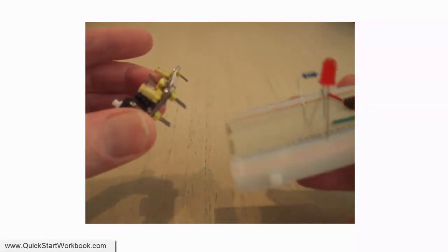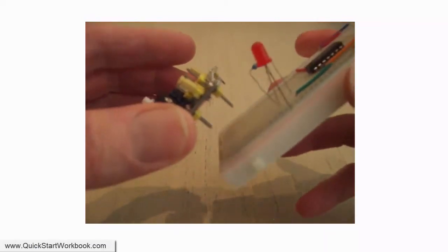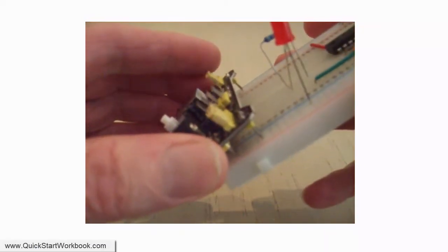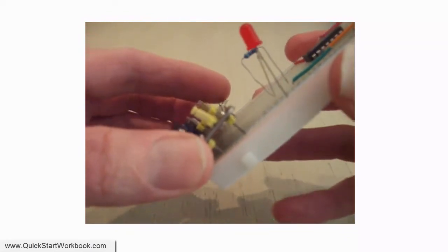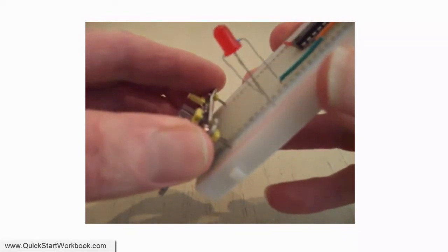Connecting the module to a breadboard is really easy. You just need to align the four sets of pins with holes on the breadboard. There are two sets of pins on either side of the module. Carefully push the module into position.